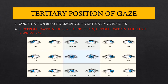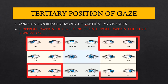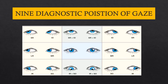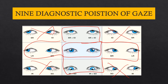The tertiary positions involve moving the eyeball both horizontally and vertically simultaneously: dextro elevation, levo elevation, dextro depression, and levo depression. Together, including primary and secondary positions, there are nine diagnostic positions of gaze in total.